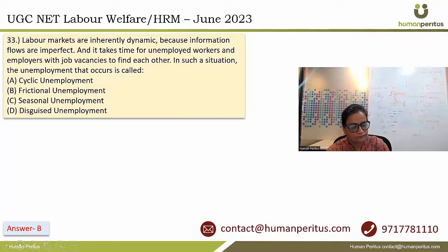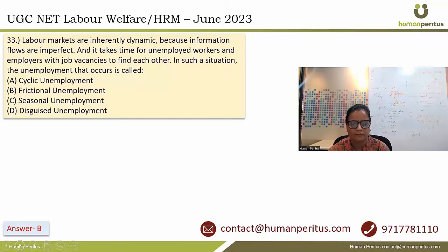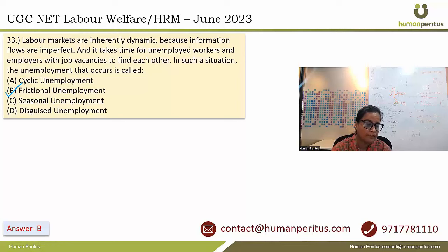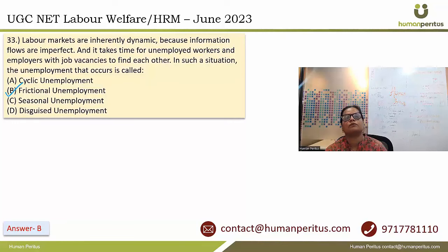Question 33: Labour markets are inherently dynamic because information flows are imperfect and it takes time for unemployed workers and employers with job vacancies to find each other. The type of unemployment that occurs in such a situation is called frictional unemployment — temporary unemployment that occurs when individuals are transitioning between jobs or entering the workforce for the first time. Answer is option B.